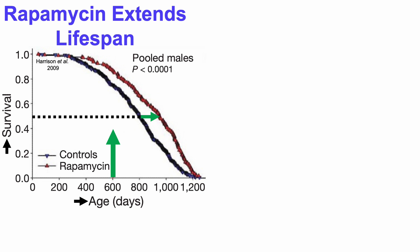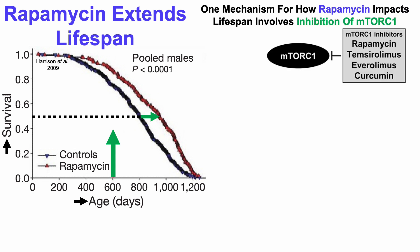I covered that in an earlier video, and if you missed it, it'll be in the right corner. One mechanism for how rapamycin impacts lifespan involves inhibition of mTOR complex 1, or mTORC1. And we can see that here on this relatively short list of mTORC1 inhibitors — rapamycin is there.